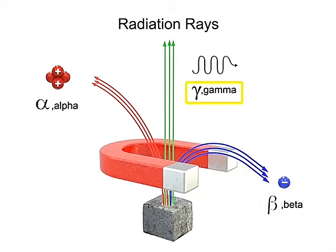Gamma rays are pure energy. Because a gamma ray has neither mass nor charge, it remains unaffected by the magnetic field.